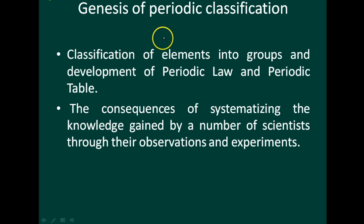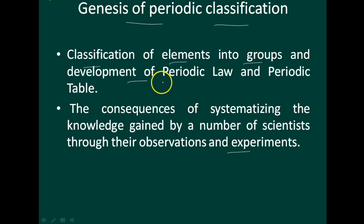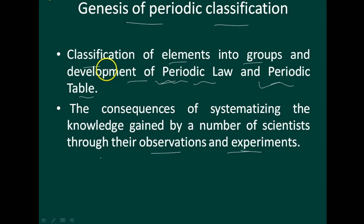The next concept is genesis of periodic classification. Classification of elements into groups and development of periodic law and periodic tables are the consequences of systematizing the knowledge gained by a number of scientists through their observations and experiments. Scientists through their observations and experiments gave the periodic law and also the periodic table by classifying elements into groups.